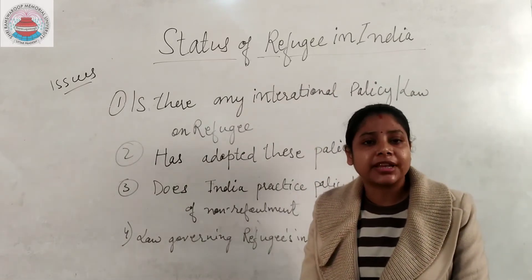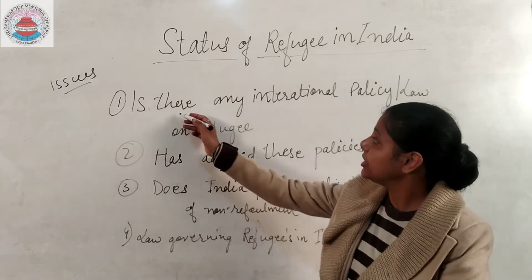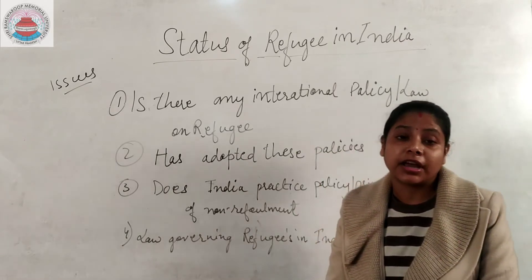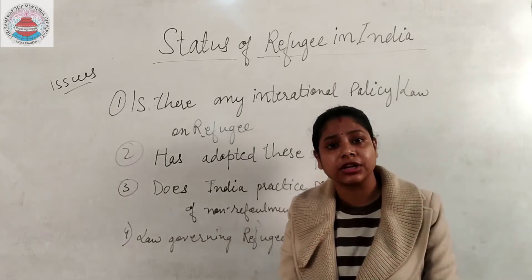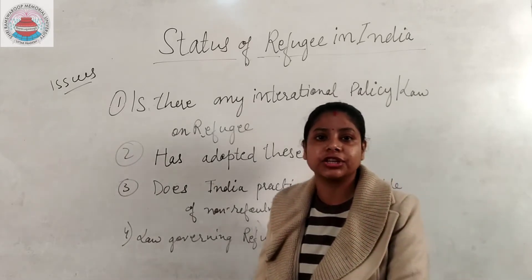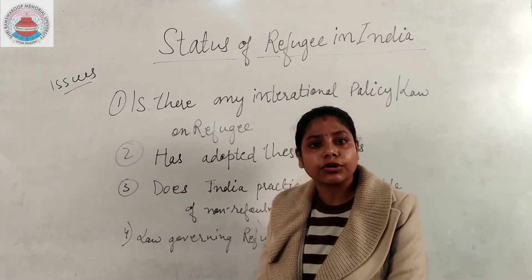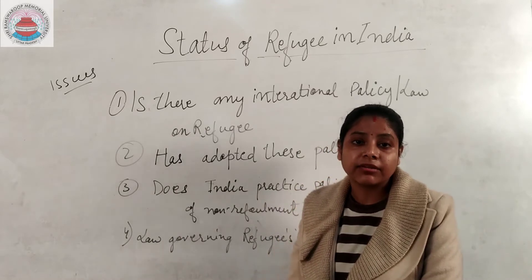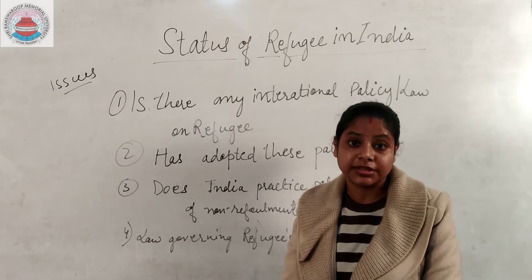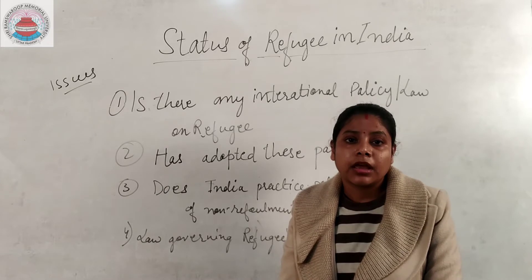Before starting with the lecture, we need to know a few crucial points. First, is there any international policy on refugees? The answer is yes. We have two international covenants: the UN Convention on the Status of Refugees 1951 and its Protocol of 1967. Presently, 148 countries are signatories to this convention. It is unfortunate that India is not a party to the same.